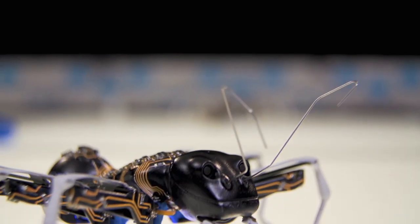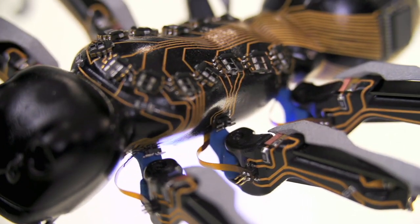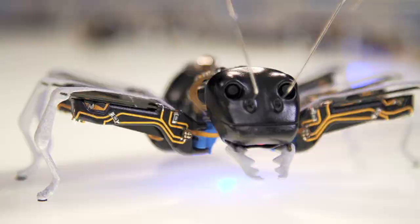Elsewhere, the bionic ant sits motionless in a shallow holding pen. It has a black plastic body adorned with gold conductive tracks which link external circuits and microchips.